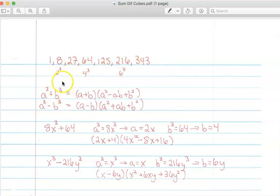And here are our two formulas. So if I have something in the form A cubed plus B cubed, it's going to factor as A plus B times the quantity A squared minus AB plus B squared. And if I have something in the form of A cubed minus B cubed, it's going to factor as A minus B times the quantity A squared plus AB plus B squared.